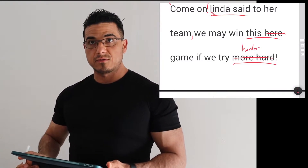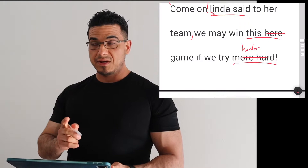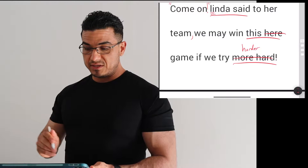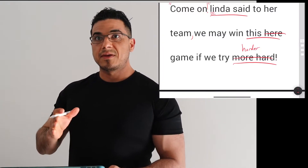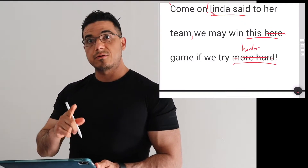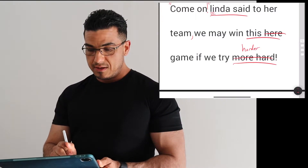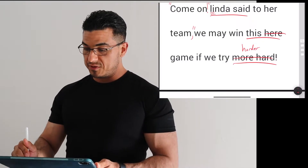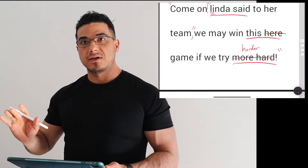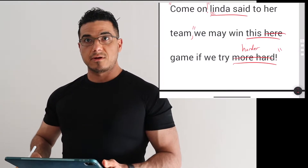And it looks like we do end with an exclamation mark to continue showcasing this energy. However, going back to reread it, I see: "Come on!" Linda said to her team, comma. We may win this game — so now what I'm noticing is after the comma, this is likely what Linda continues to say. Therefore it is considered part of this dialogue. As a result, I will need to capture that using quotation marks: "We may win this game if we try harder!" And I will close the final part with quotation marks because it all seems to be part of what she is saying. We're going to shuffle along to the second sentence.